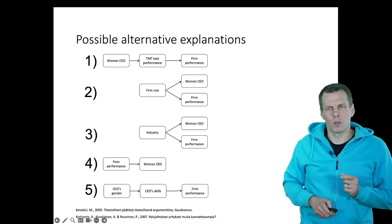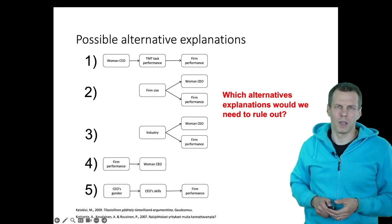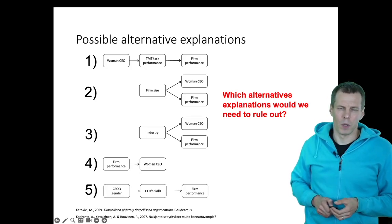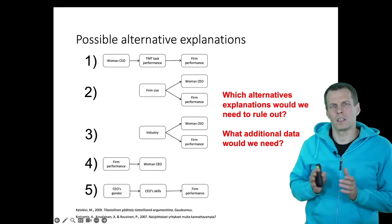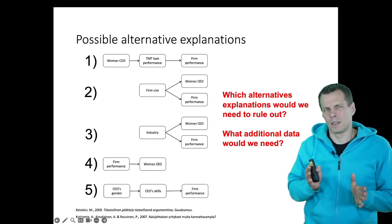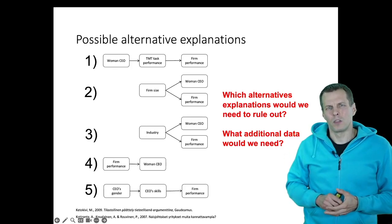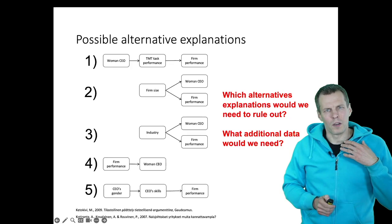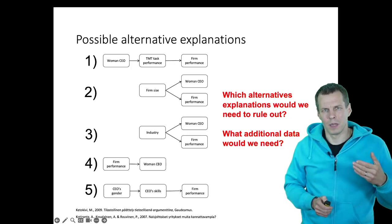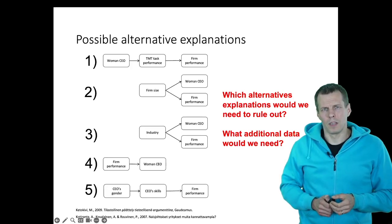A quantitative researcher would think about which alternative explanations need to be ruled out and what additional data might need to be collected. Typically, when we observe a correlation we can't claim that one variable causes another — we need to conduct a proper study. In quantitative research, when we want to understand causality, there are three conditions we need to demonstrate.